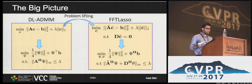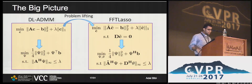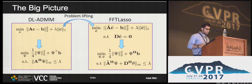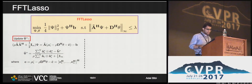Here's the big picture. On the left are the primal and dual versions of the lasso, where PL-ADMM and DL-ADMM apply ADMM to each respectively. On the right is the lifted problem and its dual version below it. FFT-Lasso applies ADMM to the dual version of the lifted problem — for similar reasons why DL-ADMM is more attractive than primal ADMM. We need to examine the update equations for FFT-Lasso to see why it is more attractive than dual ADMM.